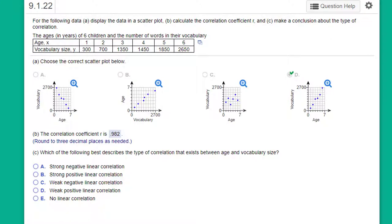Hi, this is Dr. Don. I have a problem in Chapter 9 about correlation and in it you're asked to calculate the correlation coefficient r after you make a scatter plot and then make a conclusion.